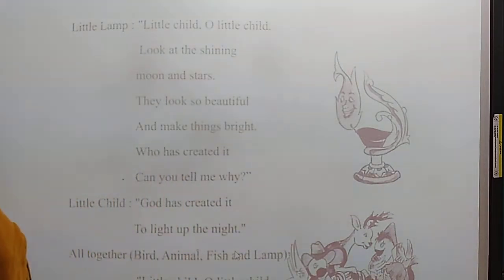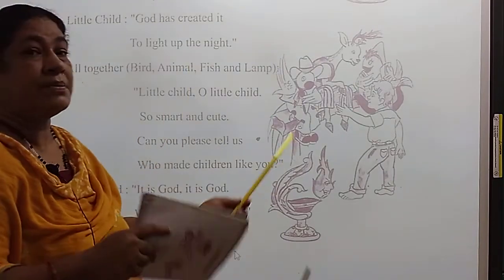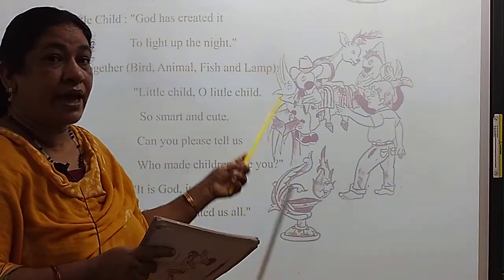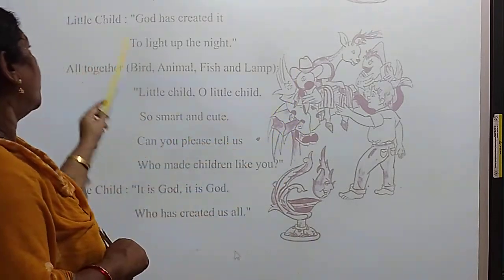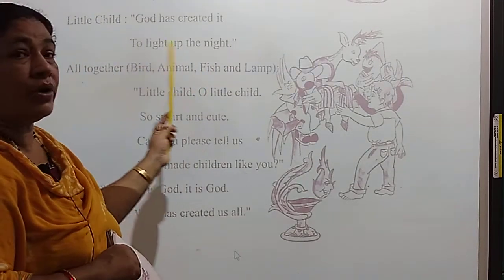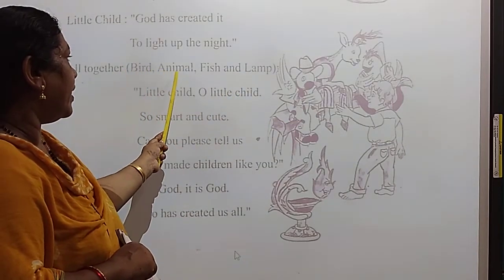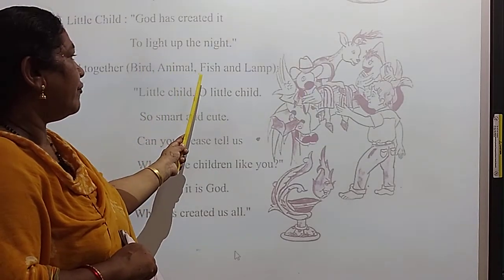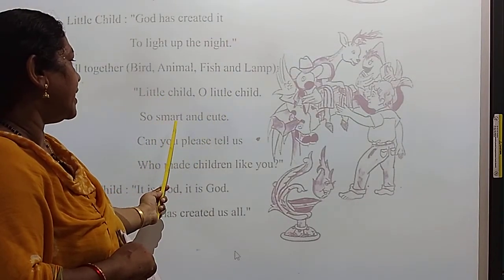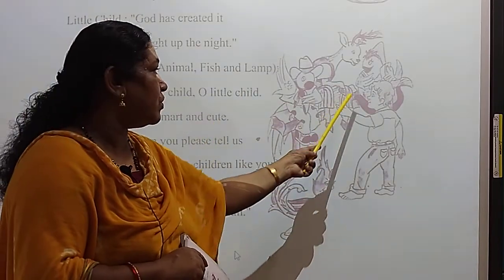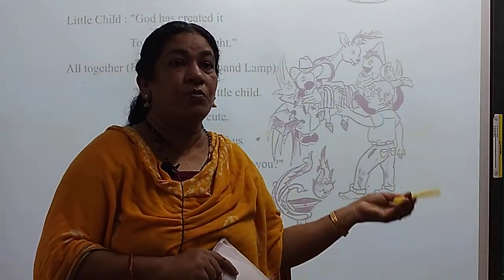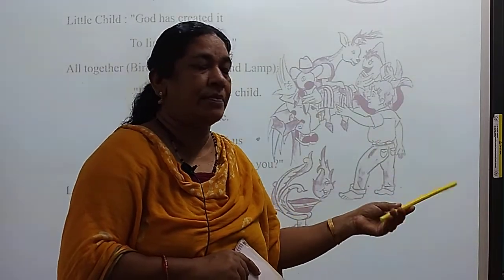Now next, all together. First came the bird, then fish, then animal, then little lamb. Little child, so smart and cute. All together — bird, B-I-R-D, animal, A-N-I-M-A-L, fish, F-I-S-H, and lamb, L-A-M-B. Bird asked about the sky, animal about the forest, fish about the sea, and lamb about the moon and stars.